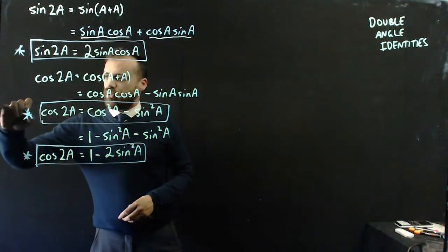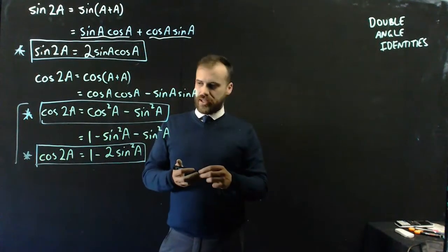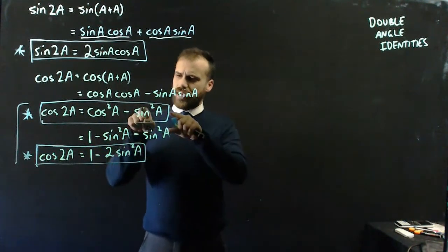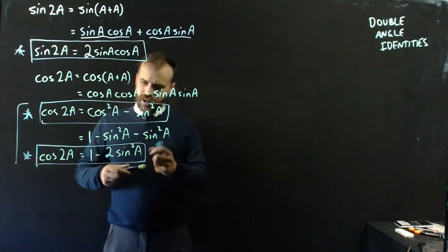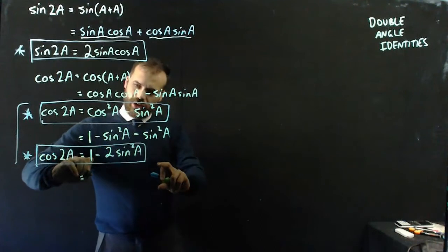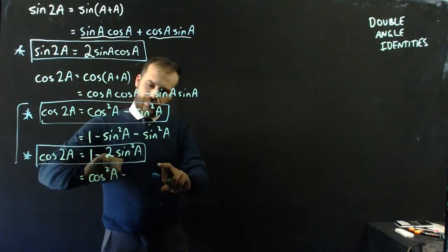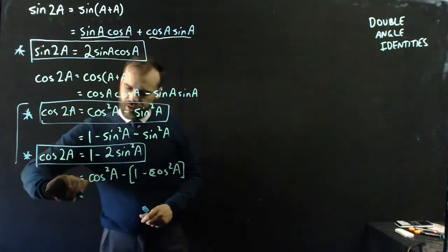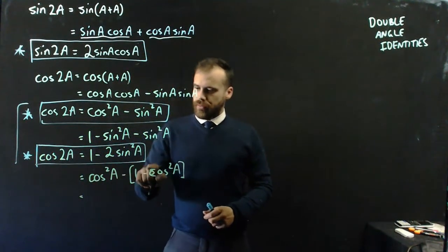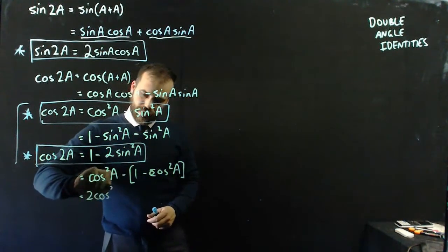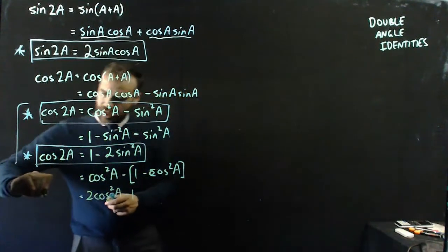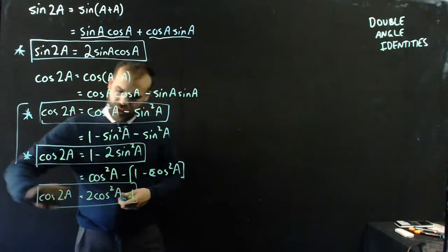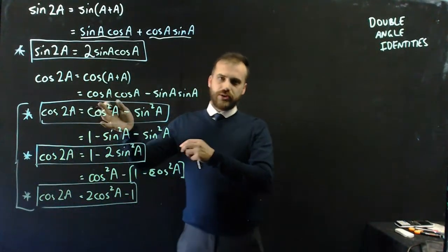That is our second form of the same identity. But there is a third form of that same identity because instead of replacing cos²(A) with 1 minus sin²(A), you could replace sin²(A) with 1 minus cos²(A). I could say that cos²(A) minus (1 minus cos²(A)). And I get cos²(A) minus minus cos²(A), so that's going to be 2cos²(A) minus 1. That is a third very useful form of the double angle identity for cos(2A).